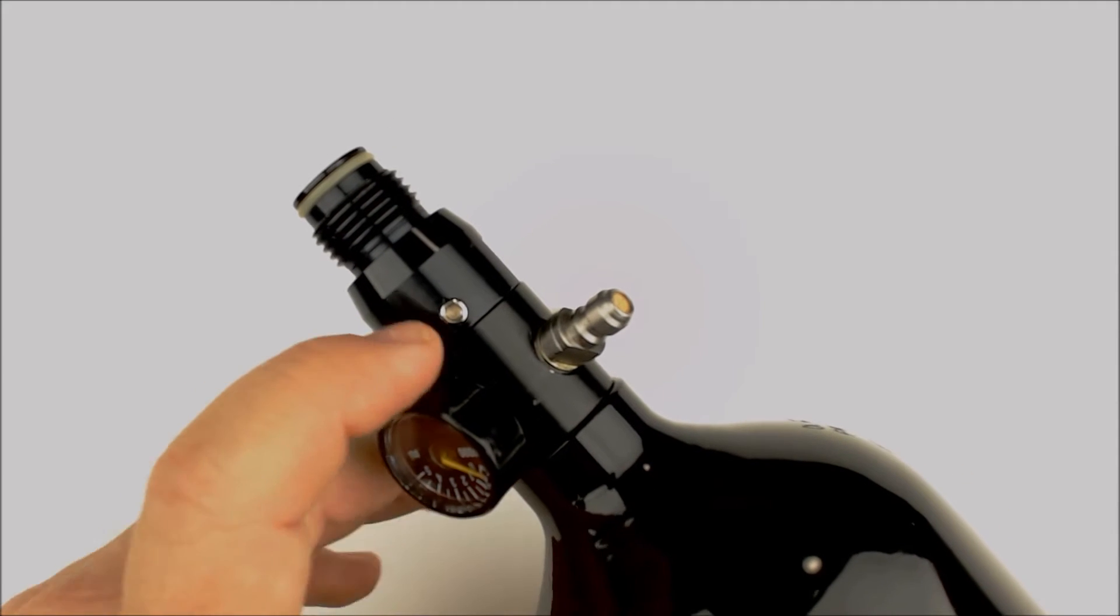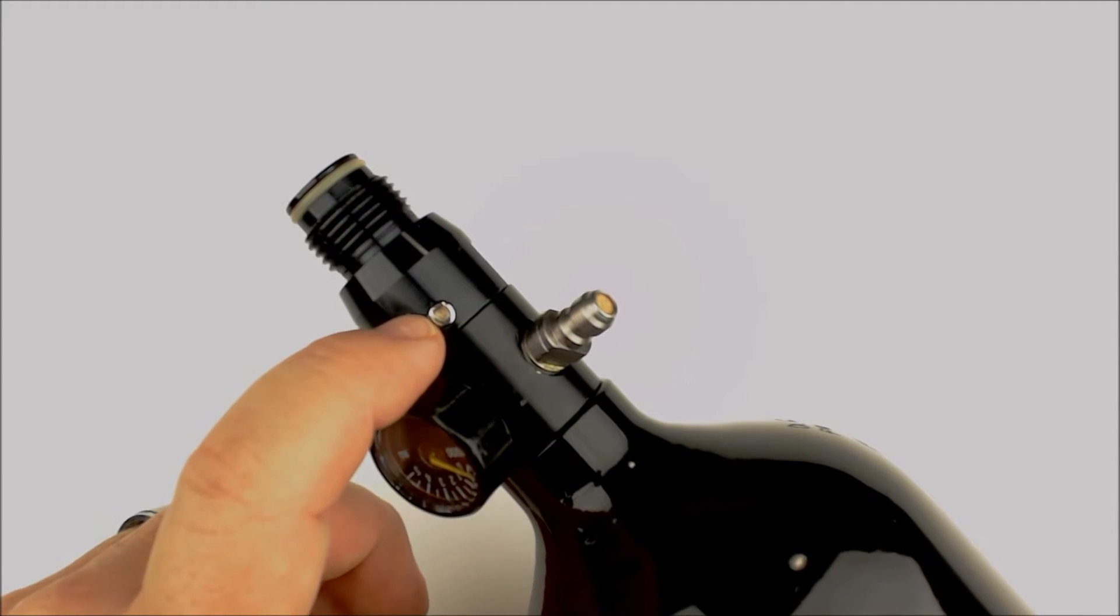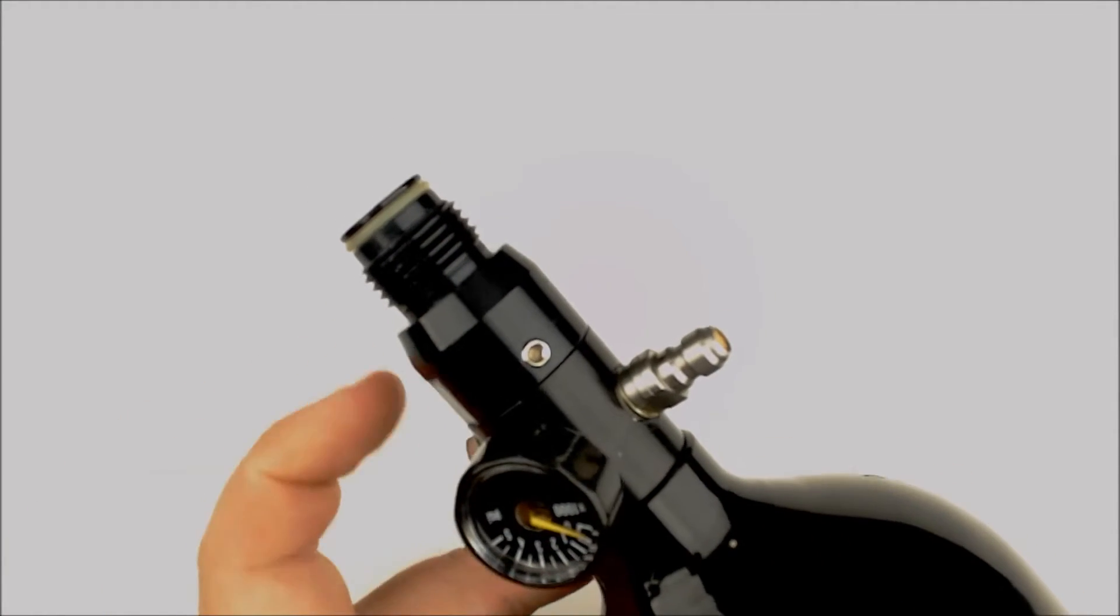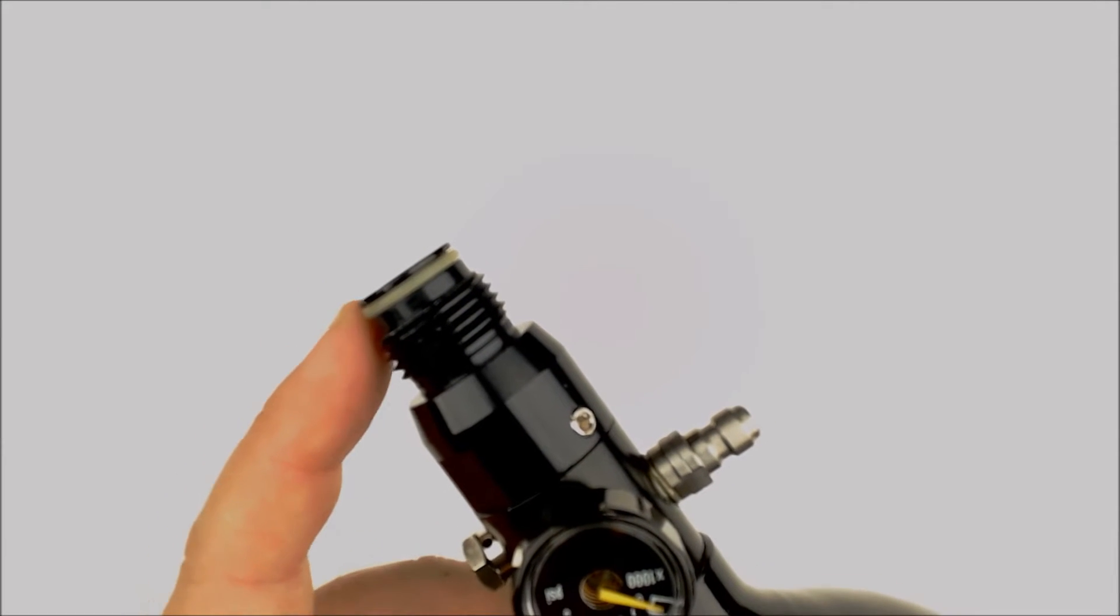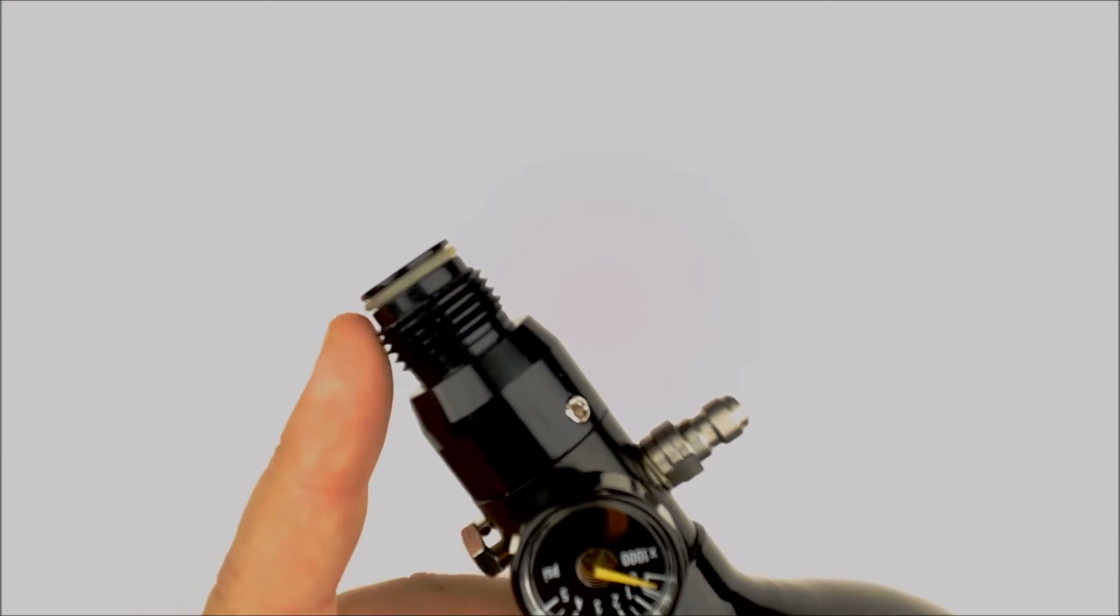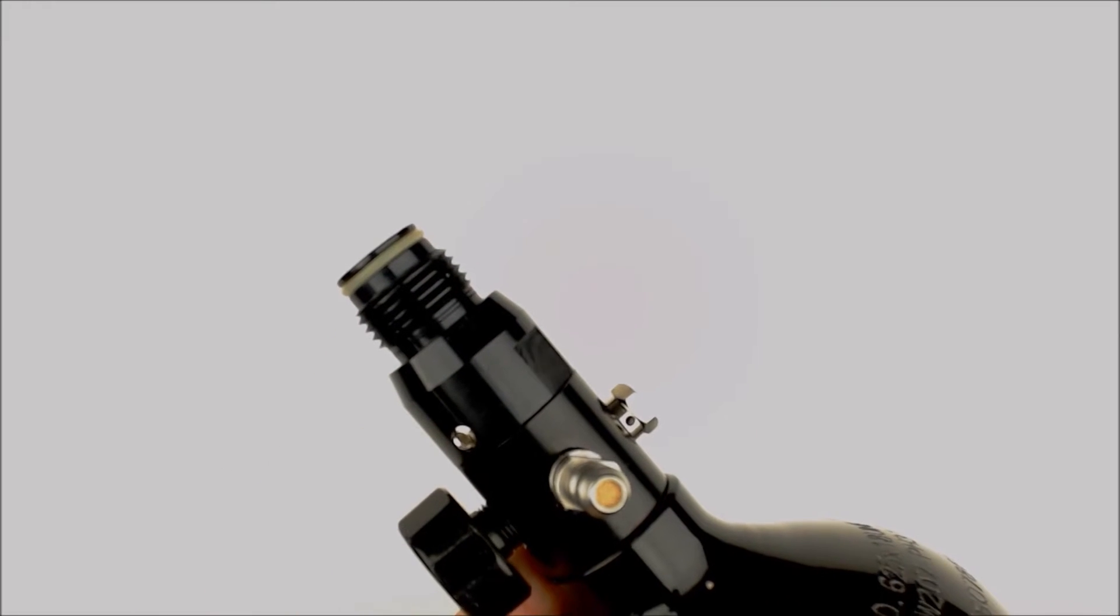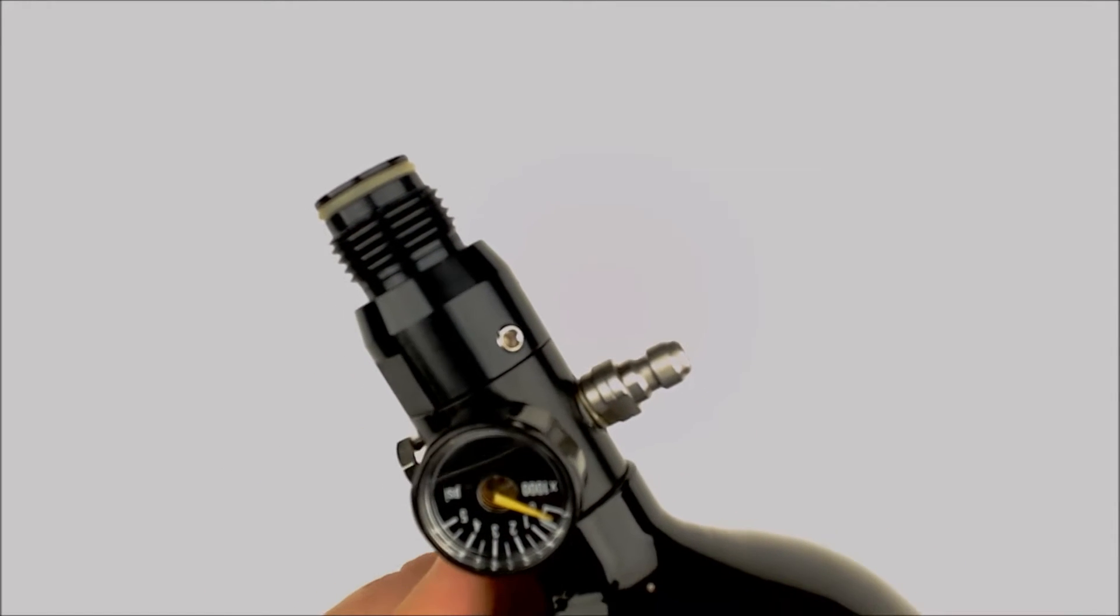The top part of the tank here is called the bonnet. The bonnet screws on, but it's held finally locked into place with a set screw. On the top is just an O-ring. This is a bottle O-ring, standard as any CO2 or HPA bottle. So we'll just start by taking things apart.